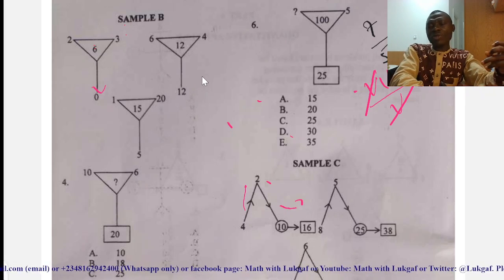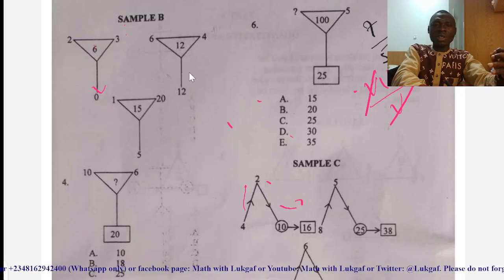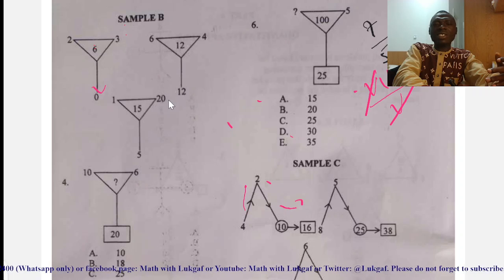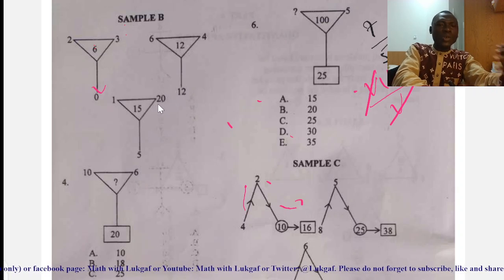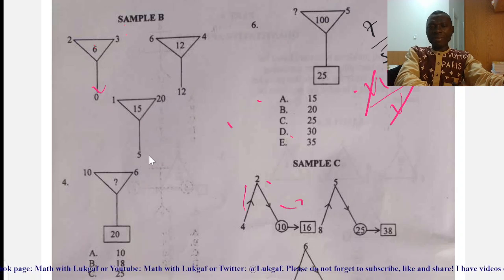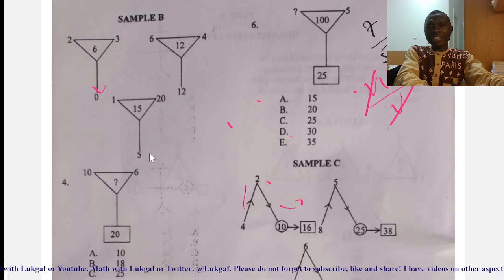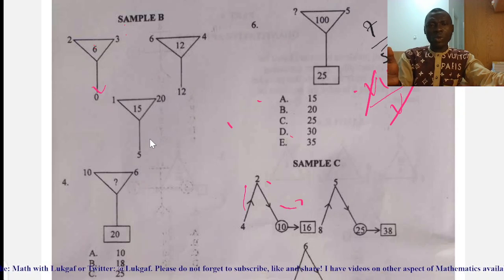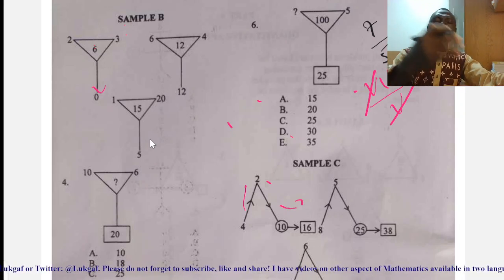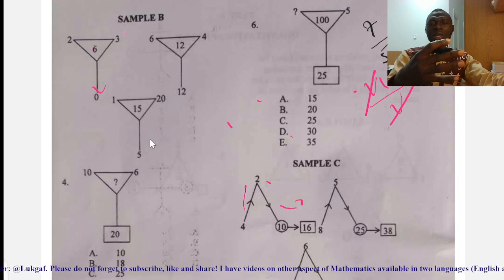Go to the third one and test whether the rule holds there as well. What is one multiplied by 20? That is 20. 20 minus 15 will give me five. You see that the rule holds for all the examples you were given there. You are good to go to apply that rule into the scenario with which you were given as an exercise.